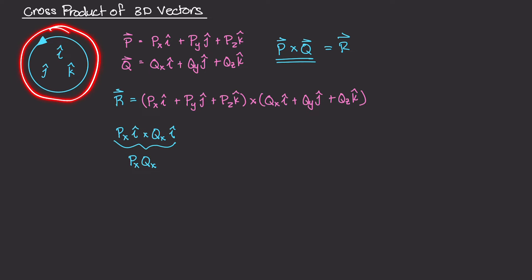I cross I is interesting — looking at the diagram, the cross-product of the same unit vector gives zero, because the angle theta between them is 0 and sine of 0 is 0. So I cross I equals zero, and this term becomes zero. We've taken PX crossed with QX and get zero.